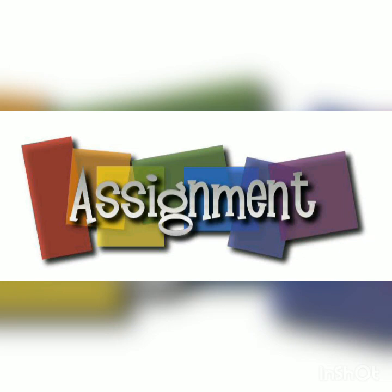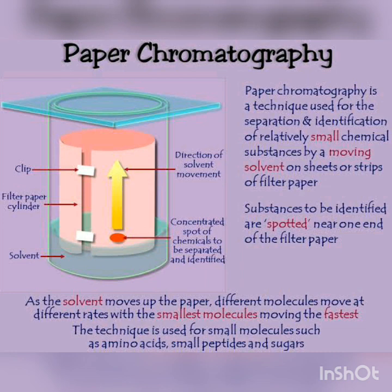In the previous video we discussed paper chromatography — a technique for separating two or more solute particles present in a solution. This method is based on the principle of solubility. As the solvent moves up the paper against gravity, the solute which is less soluble moves to a minimum height, while the most soluble solute moves to maximum height, and hence different solute particles are separated at different positions.